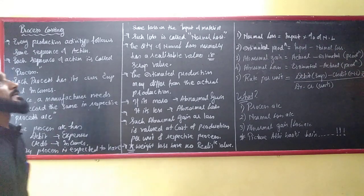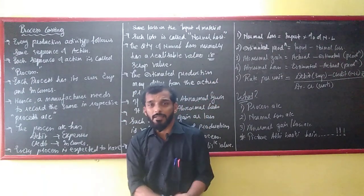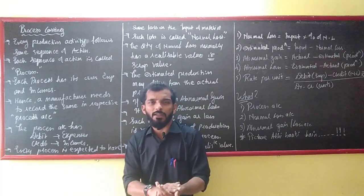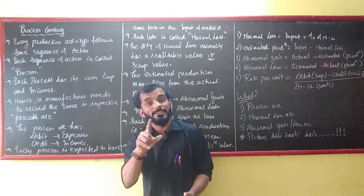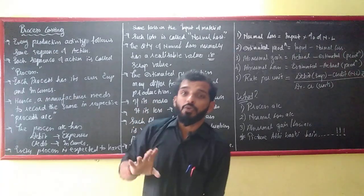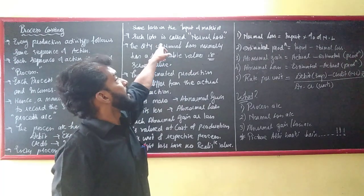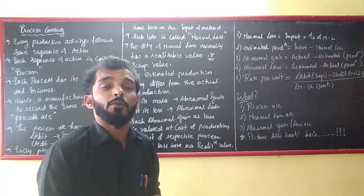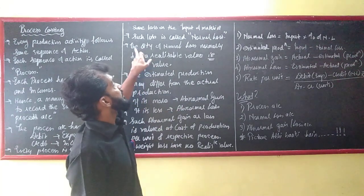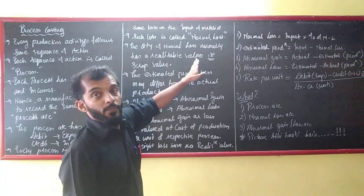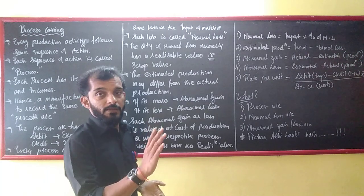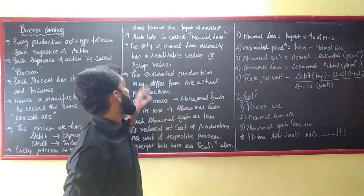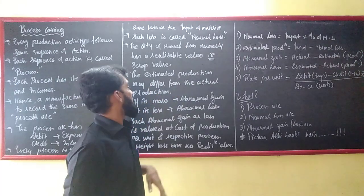Every process is expected to have some loss of the input. If I put 100 kg of potatoes in, will I get back exactly 100 kg output? Obviously not — the output will be less. This expected loss is called normal loss. Normal loss normally has a realizable value — a scrap value. Yes, every normal loss can be sold normally as scrap.